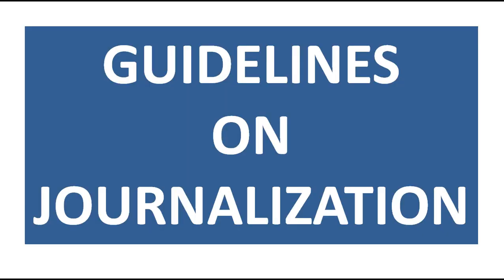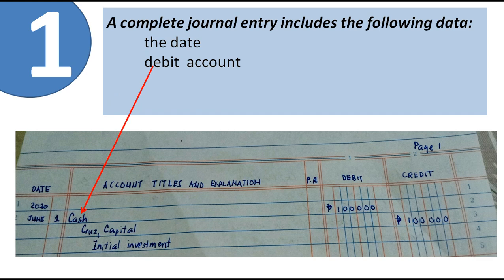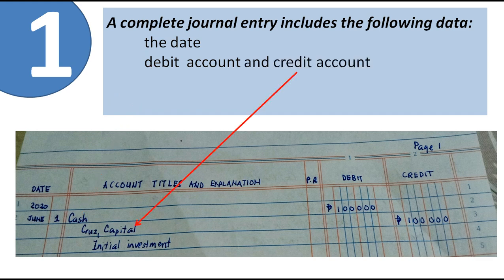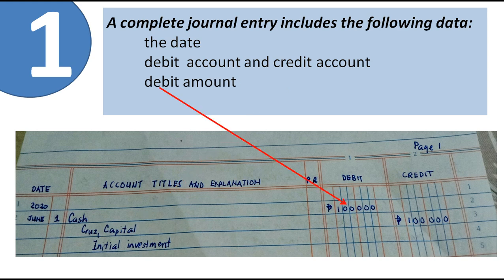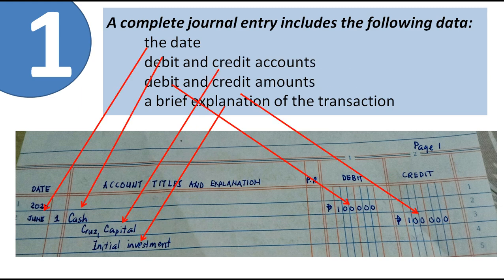Let us discuss the guidelines on journalization. First, a complete journal entry includes the following data: the date, the debit account, the credit account, the debit amount, the credit amount, and a brief explanation of the transaction. Always remember — a complete journal entry includes the date, the debit and credit accounts, the debit and credit amounts, and a brief explanation of the transaction.